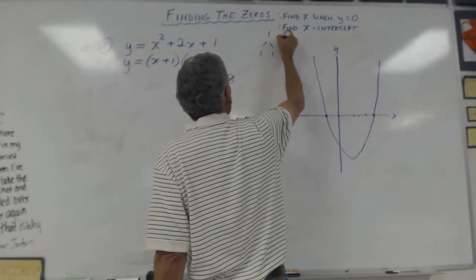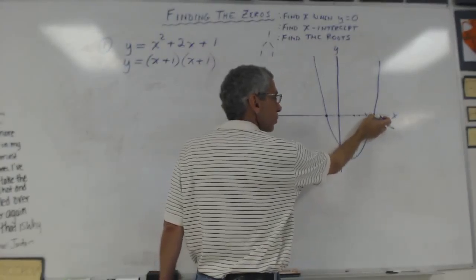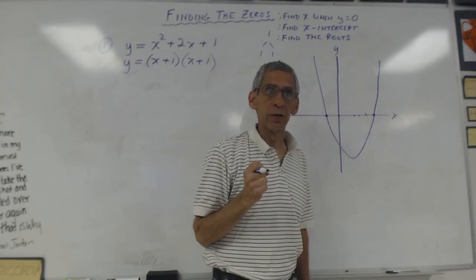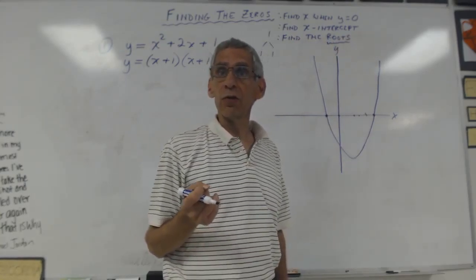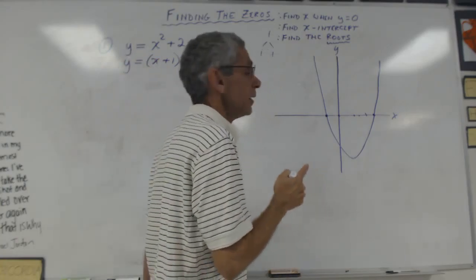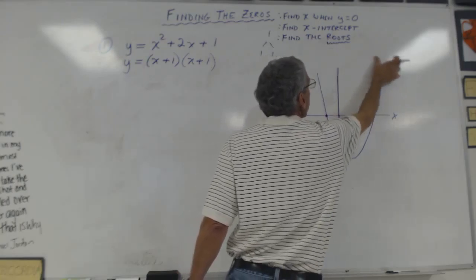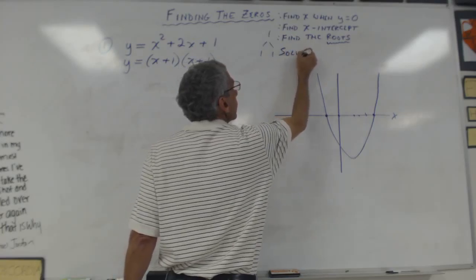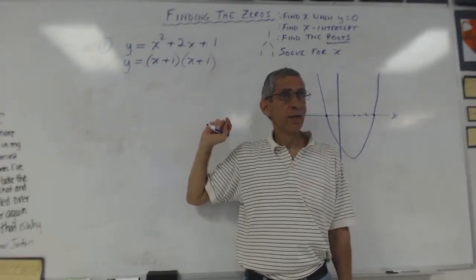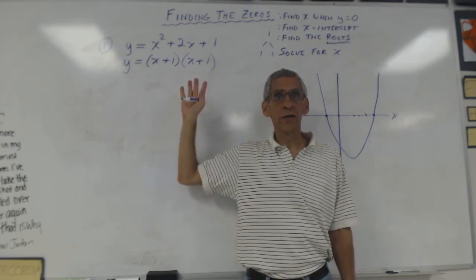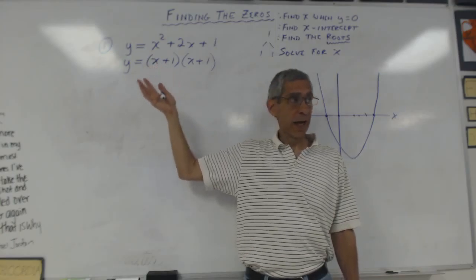There are two other things they could say. They could say 'find the roots.' The root is where it touches the ground, when it first enters the ground — that's the root. It's not used as often, but it is used, so you have to know that 'find the roots' means find the zeros. The last one is, since we do have an equal sign, they could say 'solve for x.' When they say solve — talking about quadratics — find the solution means find the zeros: find x when y is zero.